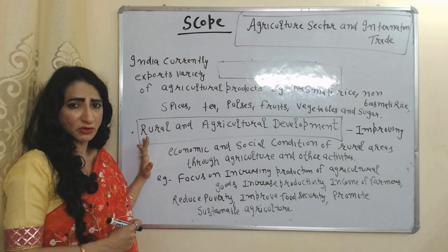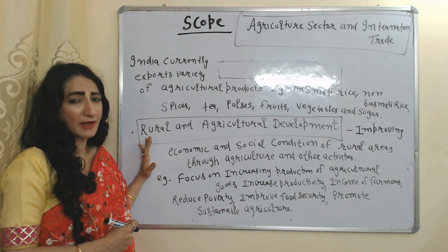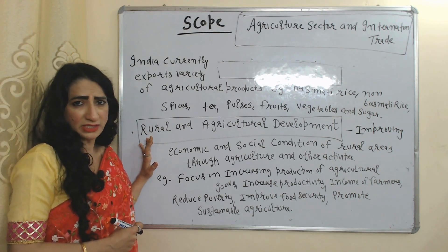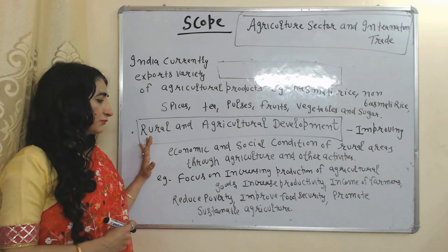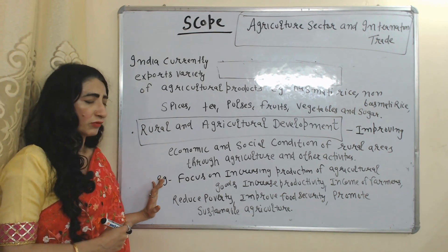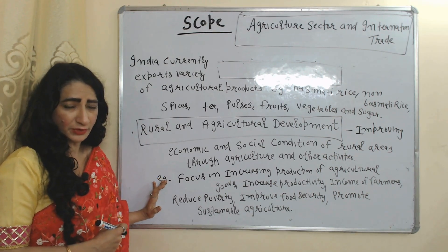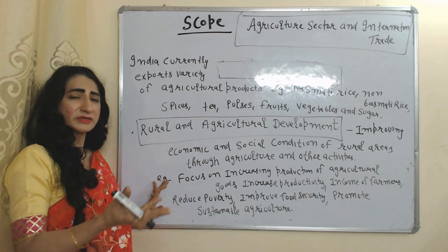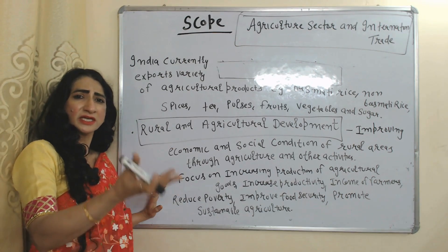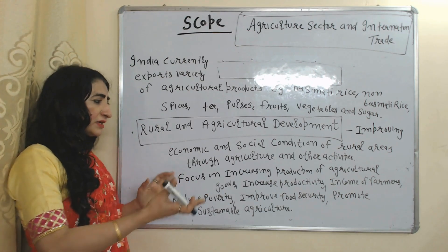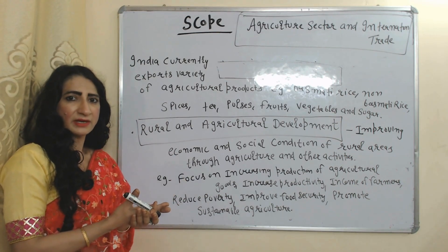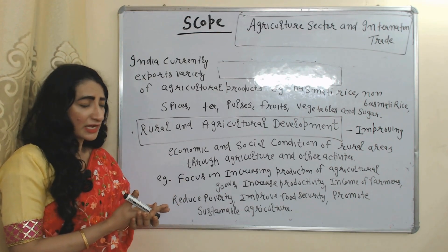Rural and agricultural development means improving the economic and social conditions of rural areas through agricultural and non-agricultural activities. This includes focus on increasing production and productivity, increasing the income of farmers, improving food security, and promoting sustainable agriculture.